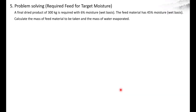Problem 5: A final dried product of 300 kg is required with 6% moisture. The feed material has 4.5% moisture. Calculate the mass of feed material to be taken and the mass of water evaporated.